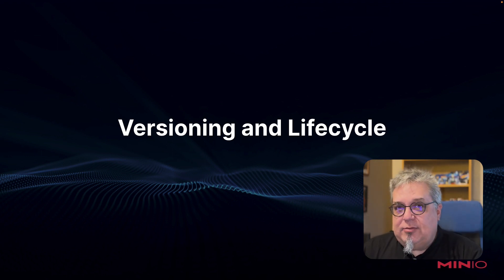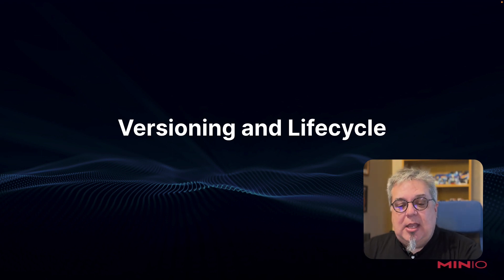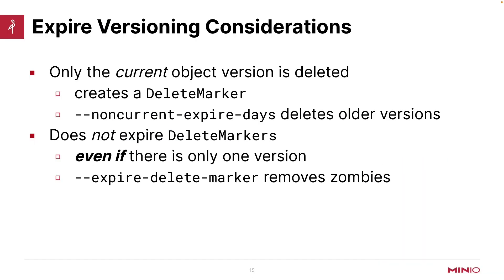Versioning is not required for lifecycle management, not at all. But if I am doing lifecycle management on a versioned bucket, I need to understand some of these options. When I am doing versioning and I am expiring objects, only the current object version is deleted — and that does create a delete marker. Non-current expire days deletes older versions, so if I have older versions and I want them deleted, I would use that flag.